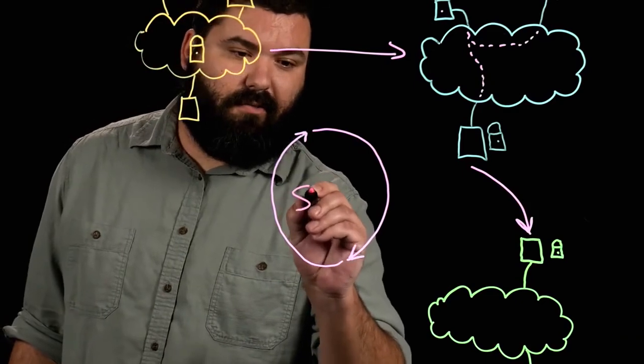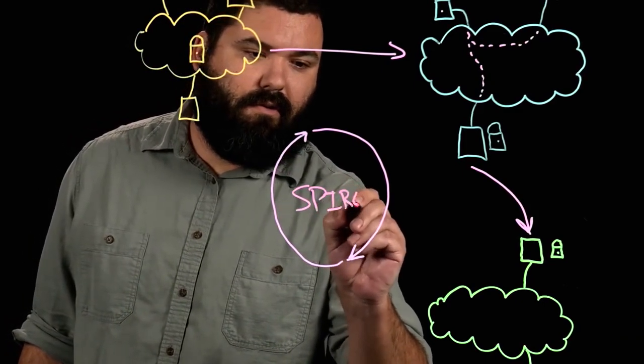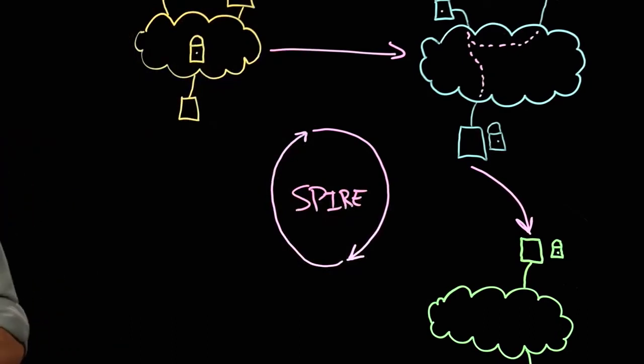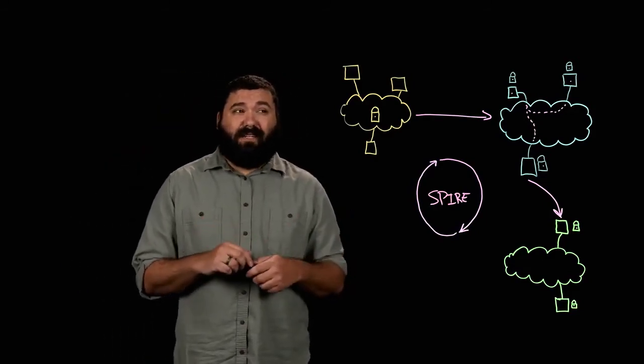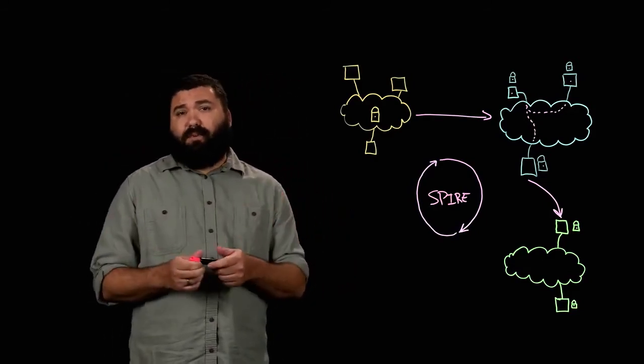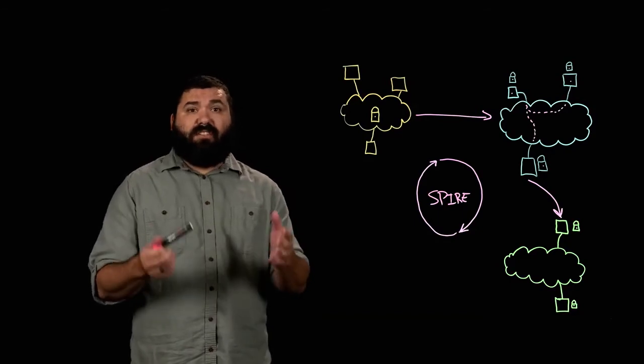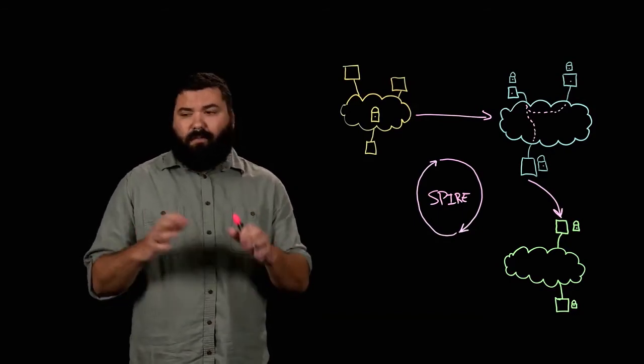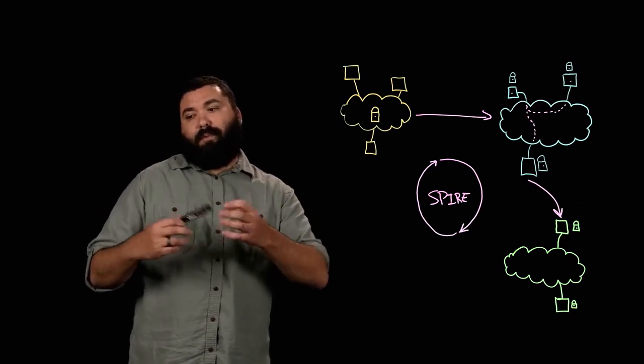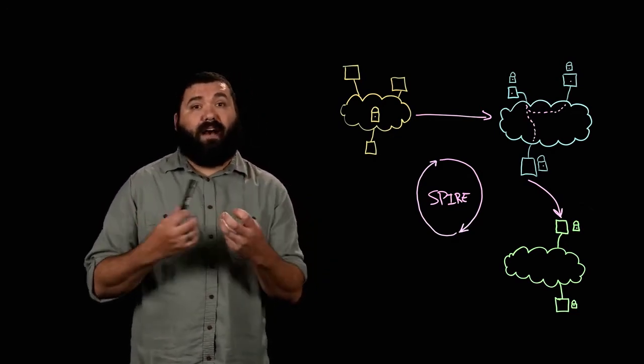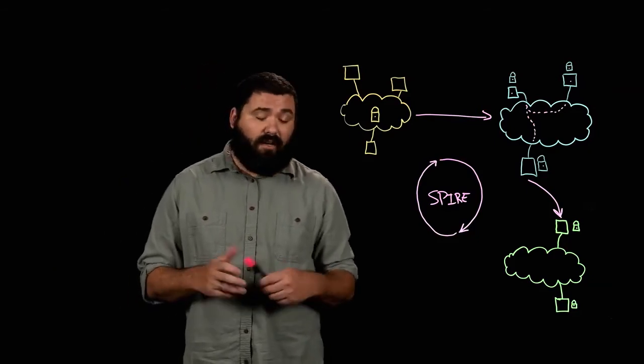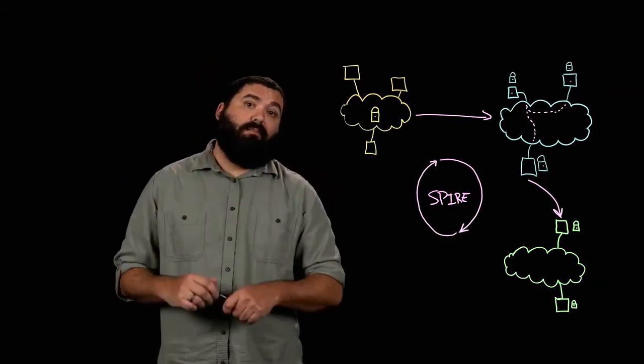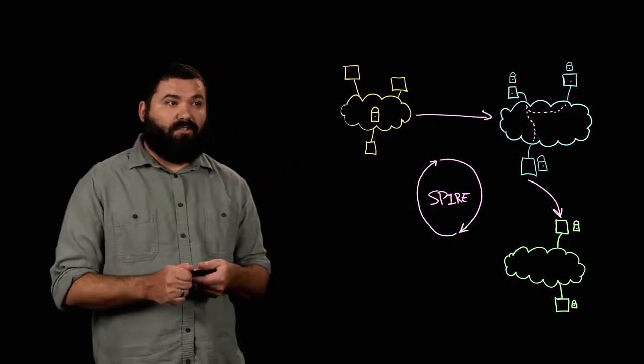And this is where Spire comes in. Spire is a software project which is designed to automate the issuance of cryptographic identity. It's built to be platform agnostic, built to run pretty much anywhere. As a result of this, it's highly pluggable. So all the core components that are platform specific can be popped in and out and mixed and matched. So if you have some custom foo in your data center or something like this, it's fairly easy to write a small plugin, pop it into Spire and teach Spire about the particulars of your infrastructure.